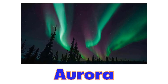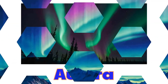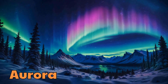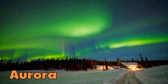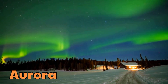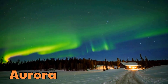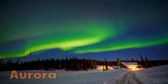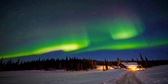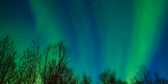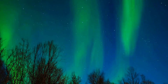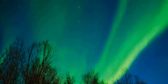Aurora. This is an aurora. An aurora is a natural light show in the sky, caused when particles from the sun collide with Earth's atmosphere, creating glowing colors near the north and south poles.